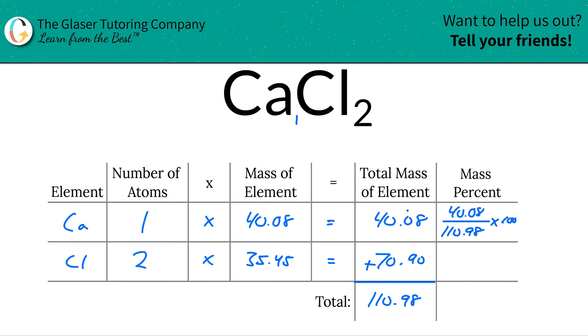And remember, you are using this column's value, not this one. It turns out to be the same for calcium, but that's only because there was one atom. So when we do that math, it's going to work out to be a percentage of approximately 36.11%.